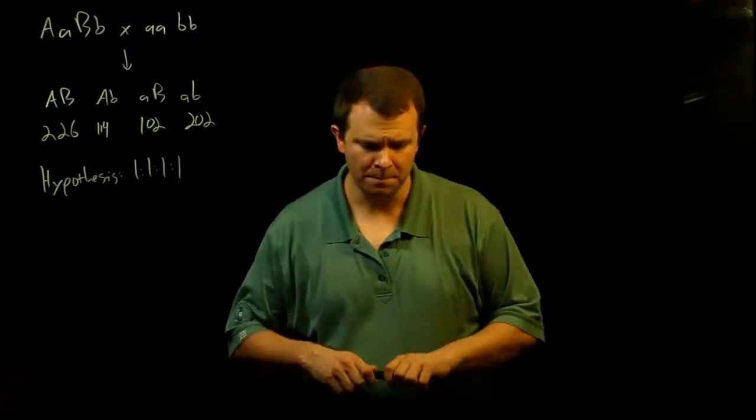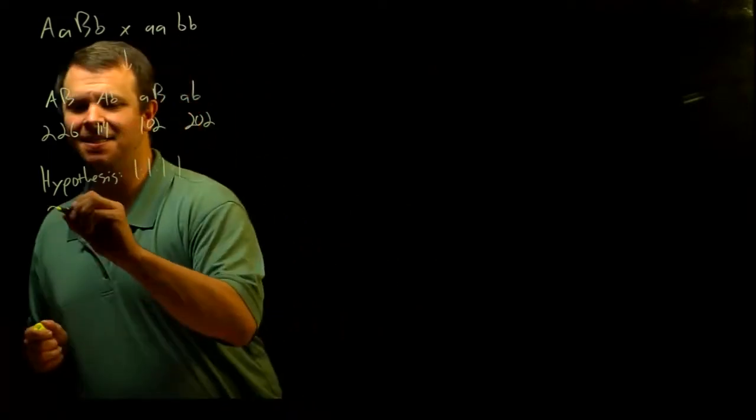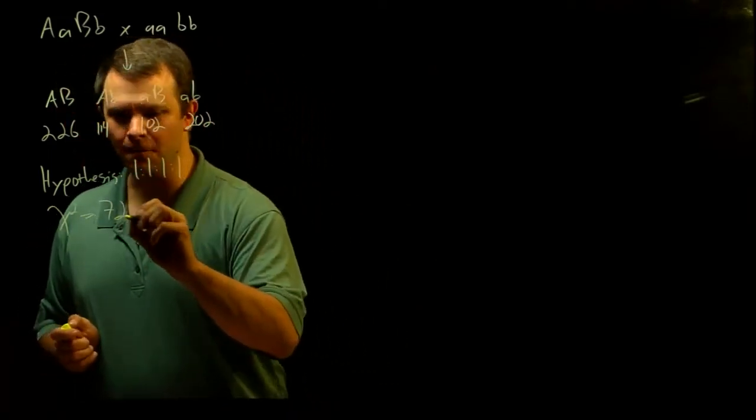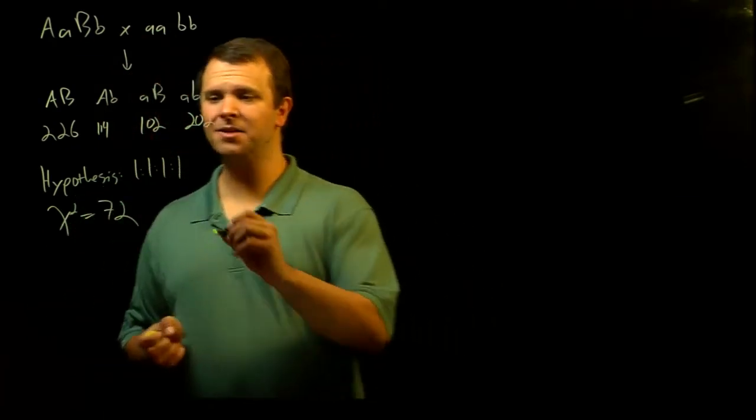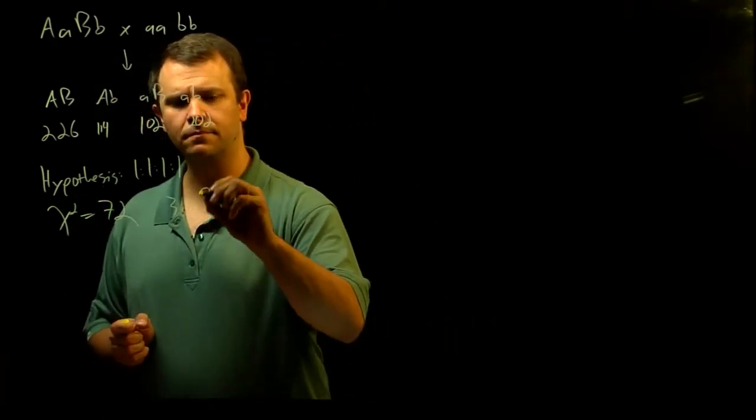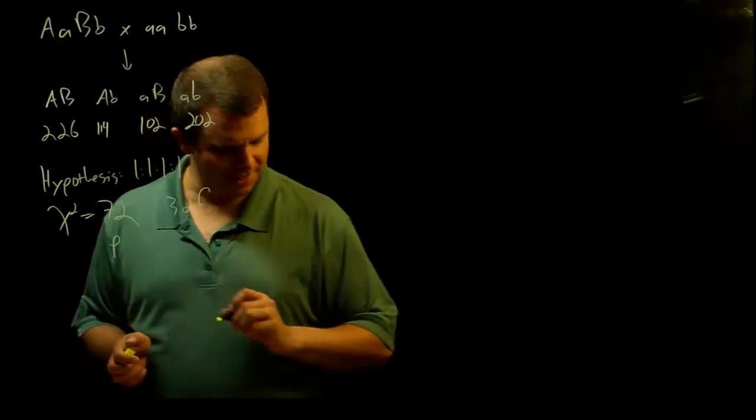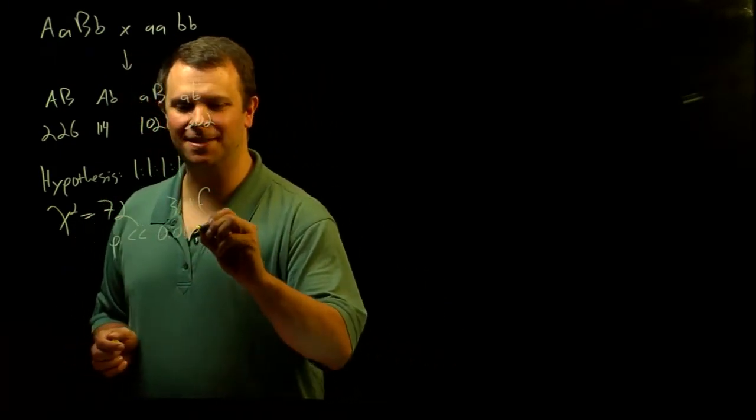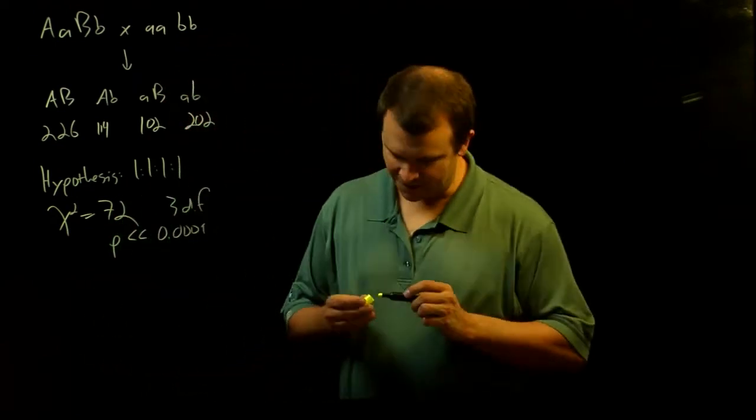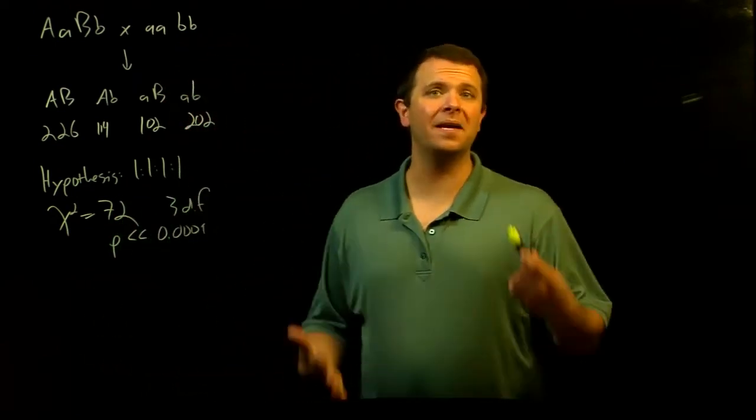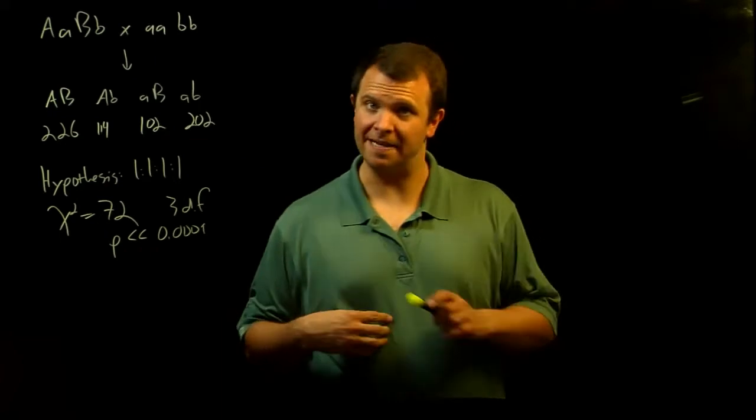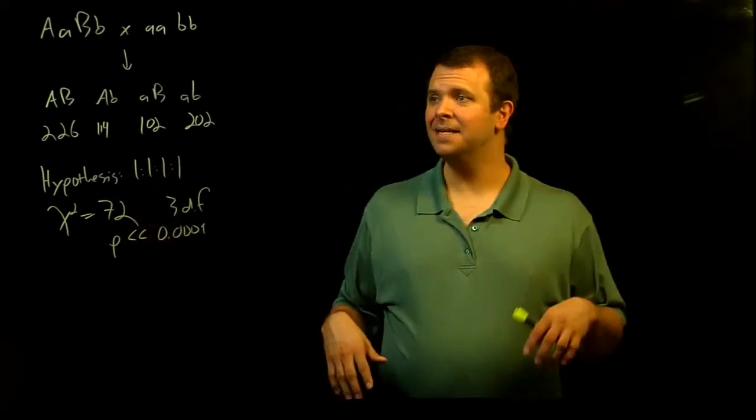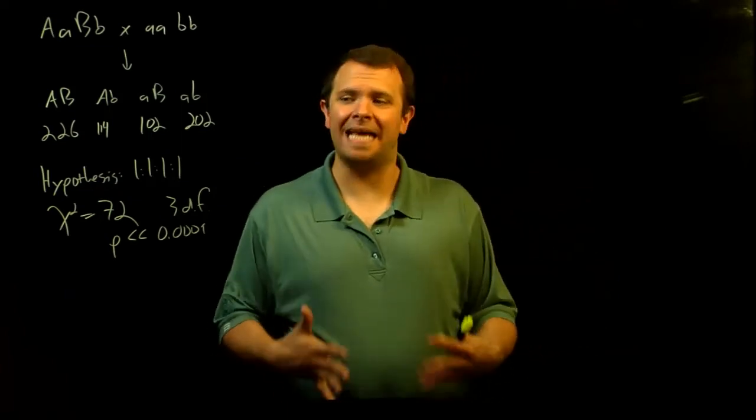And so I will spare you the math, but the chi-square test statistic here is 72, and with three degrees of freedom, the p-value is way, way, way less than 0.001. So there is definitely something going on here. There is good evidence to reject this hypothesis and suggest that something else is happening.